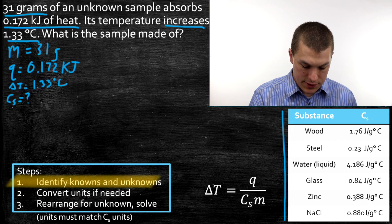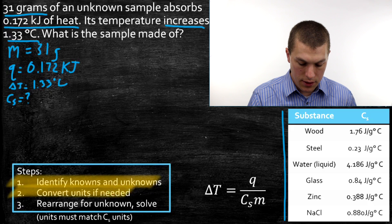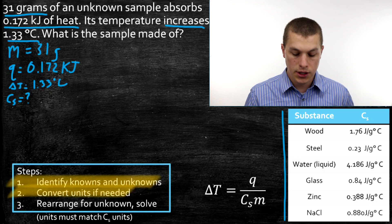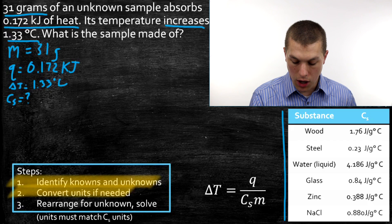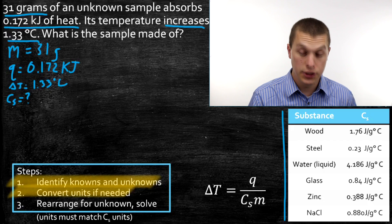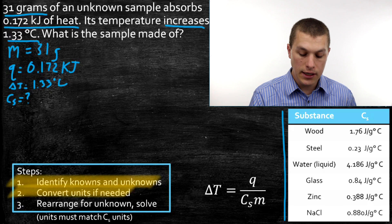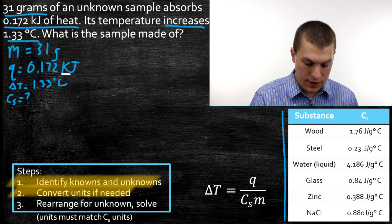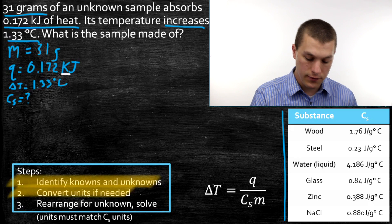Now step two says convert units if needed. And remember, they need to match our units for heat capacity, which are in joules per grams degree Celsius. So our mass is in grams, so we're good, but our heat is in kilojoules right now. That's not joules. That's kilojoules. So we have to convert that.